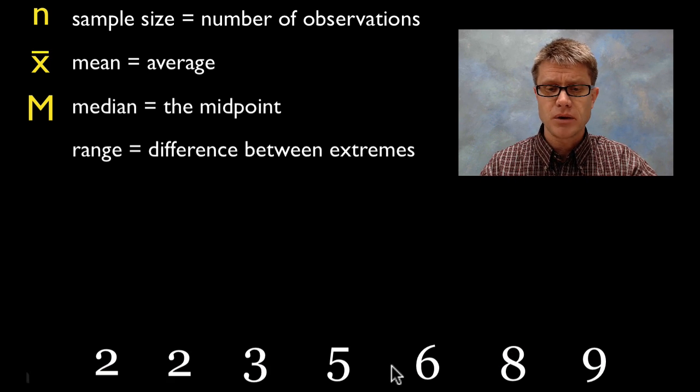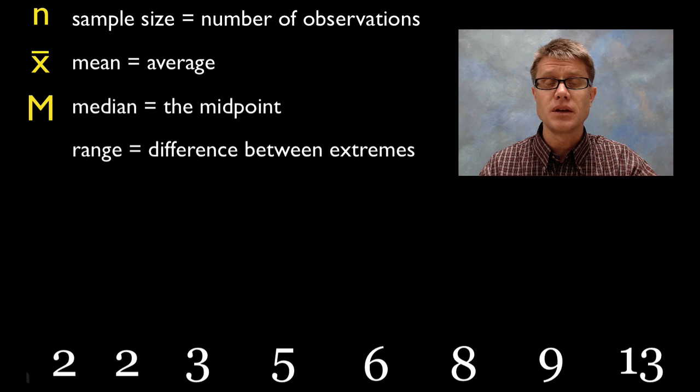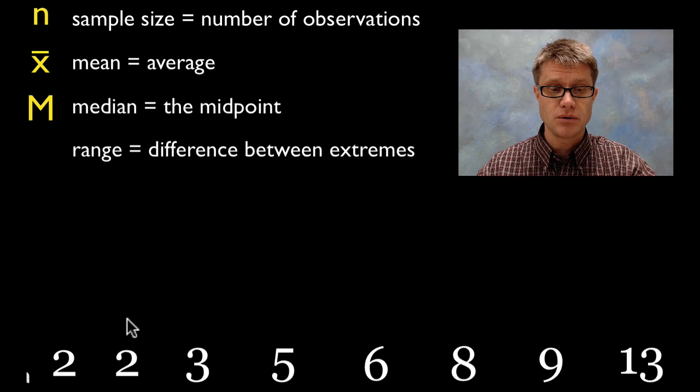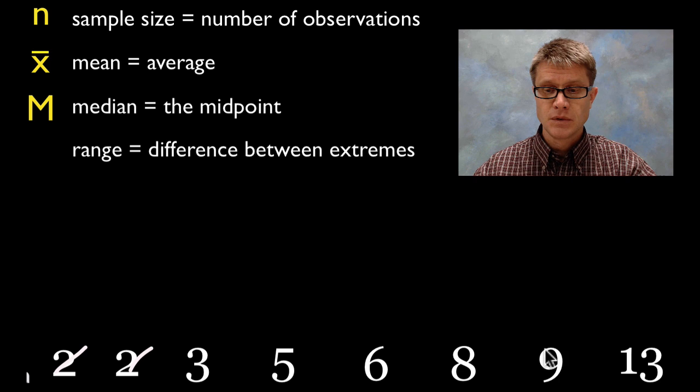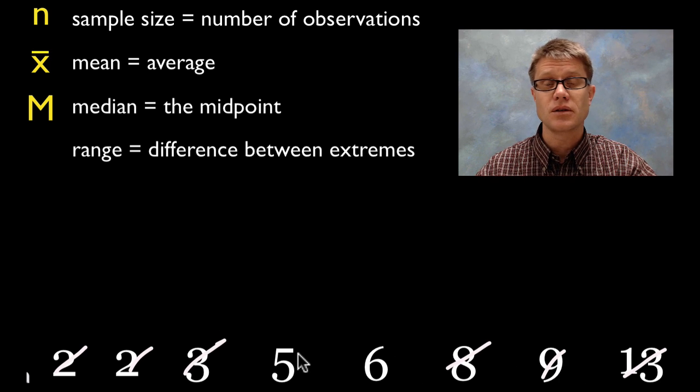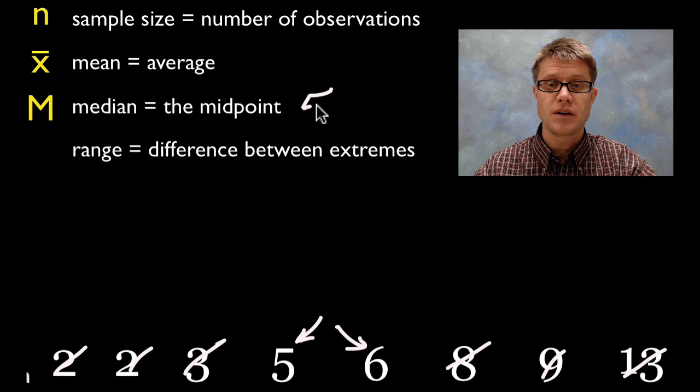But you might think to yourself well what do I do if it's not even or if it is even? In other words what do I do here? Well I could knock off 2 from each side and let me knock off another one from each side, and now I have 5 and 6. So if this is our sample set then our median is going to be the average between 5 and 6, so our average is going to be 5.5.